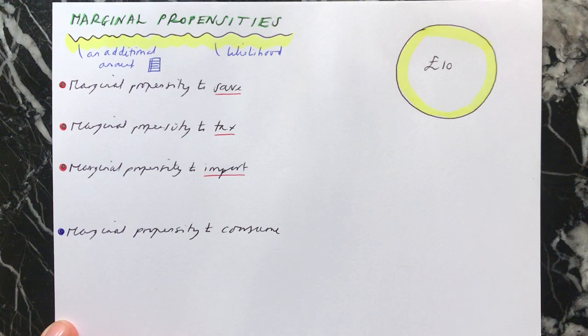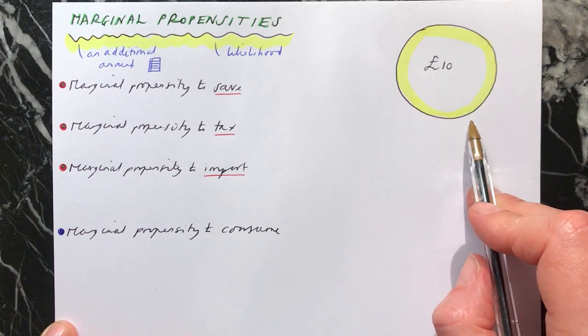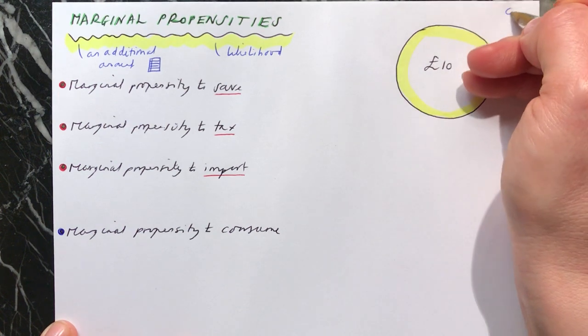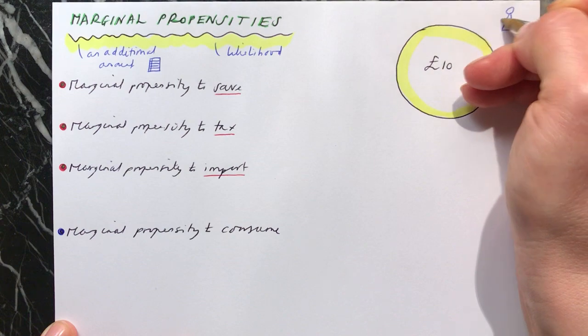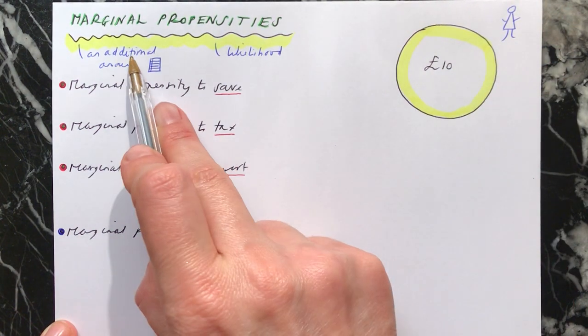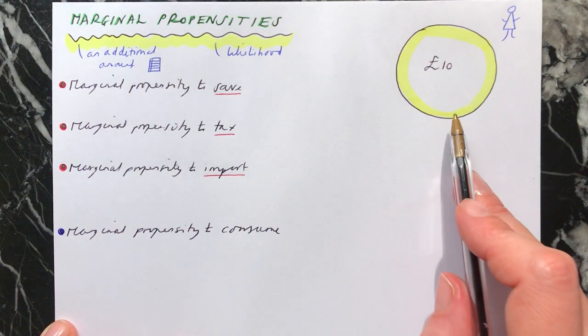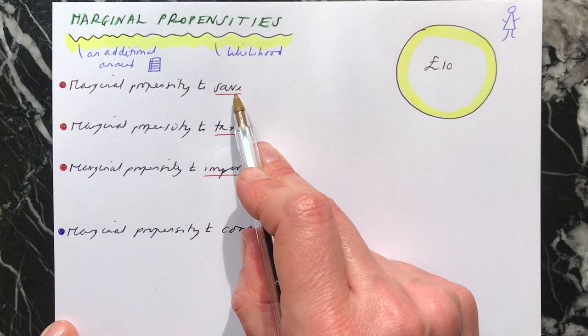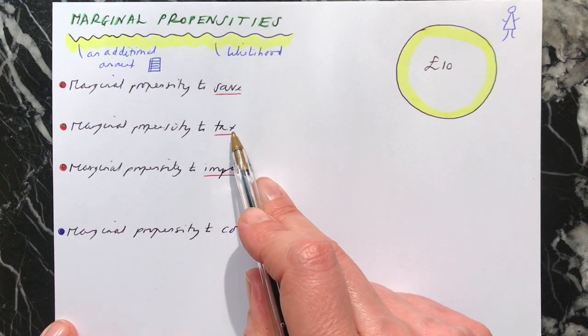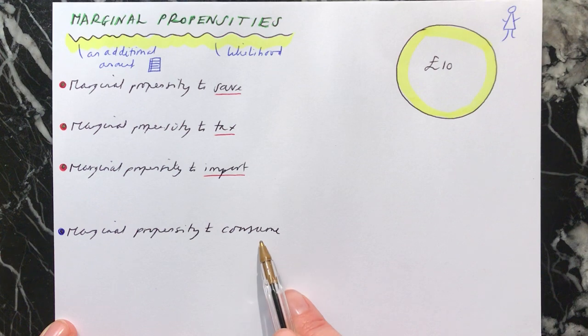So what we're looking at here is if we have an additional amount of money. So let's say that somebody receives £10 more. You give them £10. So this person here has received their £10. And you ask, what are they going to do with this additional amount of money that they've received? Some of it they might save. Some of it they might pay in tax. Some of it they might spend on imports. And some of it they might spend.